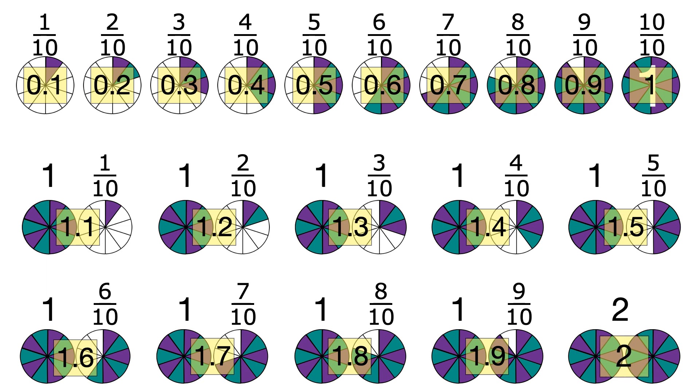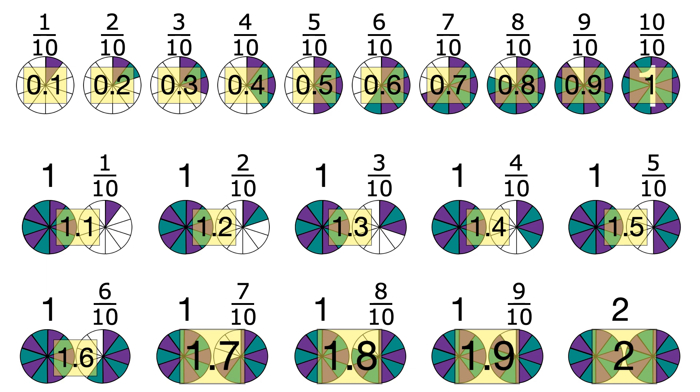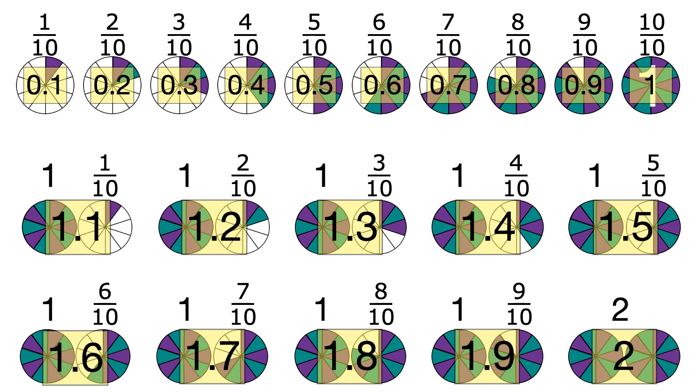Coming backwards, 2, 1.9, 1.8, 1.7, keep going. Past 1, 0.9,